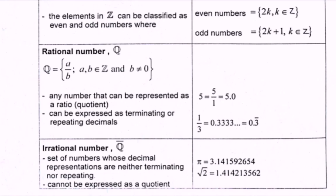Within the integers, the elements can be classified as even and odd numbers. The formula for an even number is 2k, where k must be an integer Z. For the odd number, the formula is 2k plus 1, where the value of k must also be an integer.